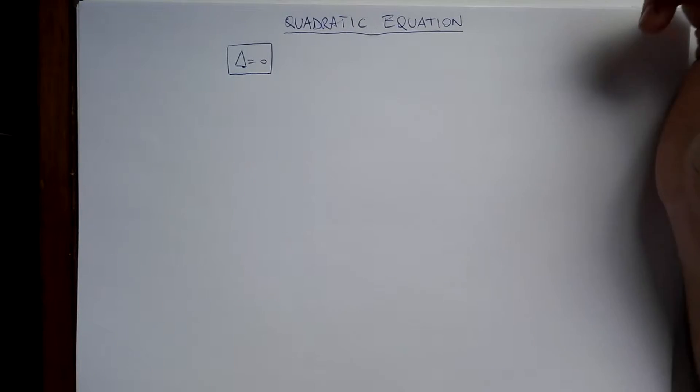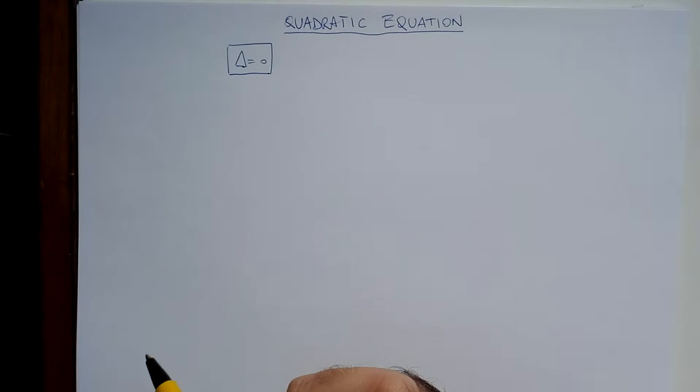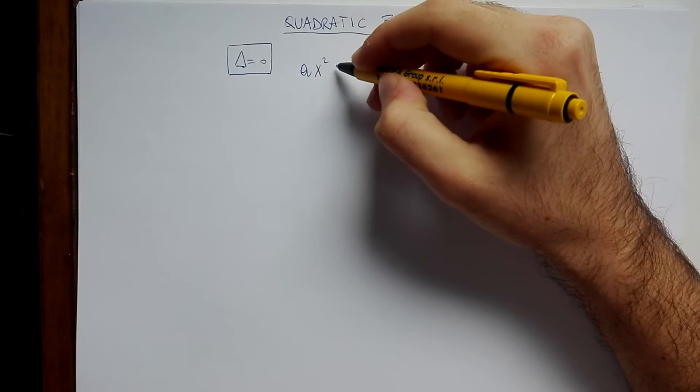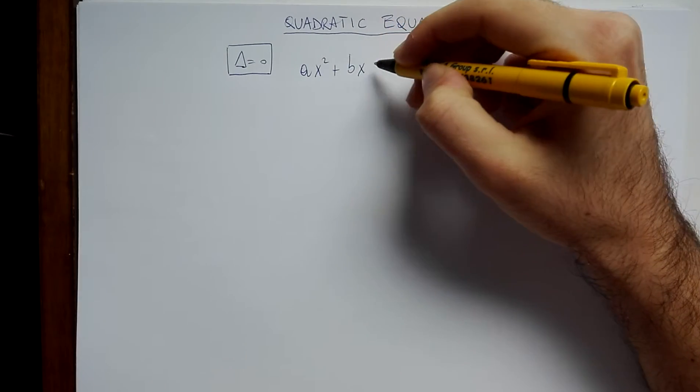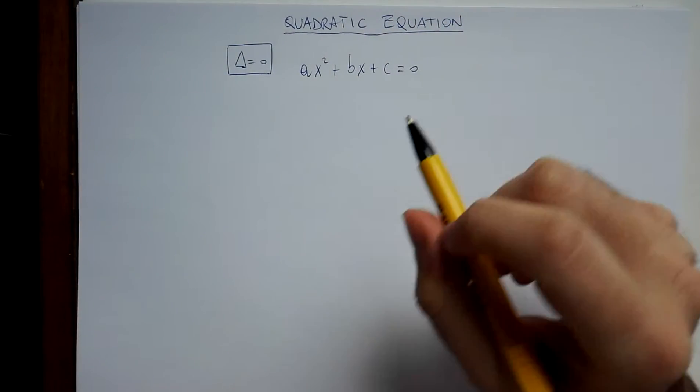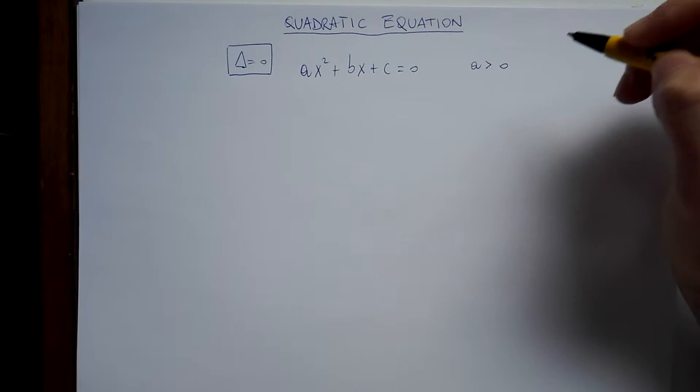Hi everybody! In this video we'll consider the quadratic equation with delta equals zero. Let's write the general formula, the general quadratic equation ax squared plus bx plus c equals zero with a greater than zero.